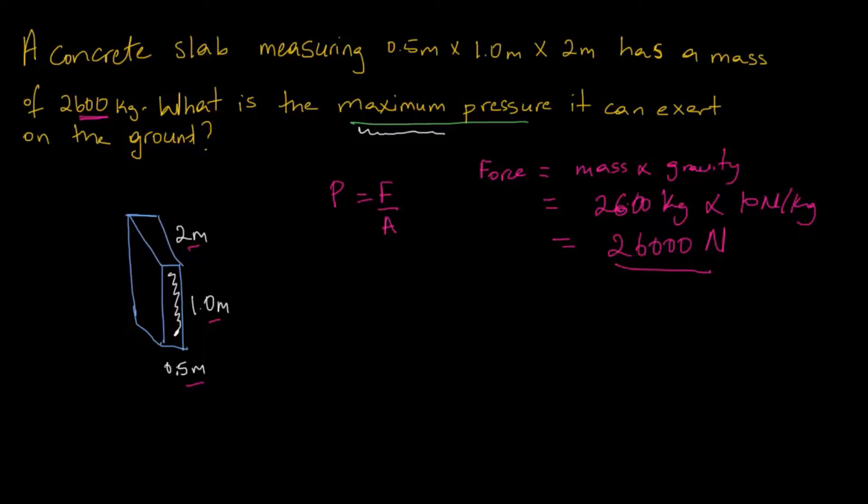So the force is 26,000 newtons and the area is 1 meter times 0.5 meters. That works out to be 26,000 divided by 0.5 meters squared, which equals 52,000 newton per meter squared, which is the same thing as 52,000 pascals.